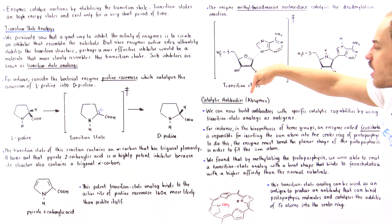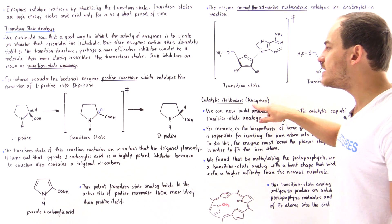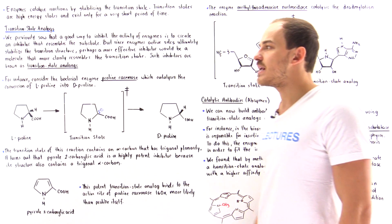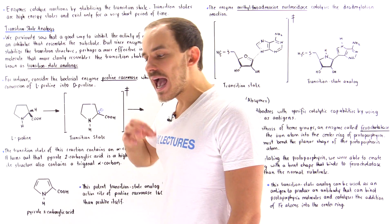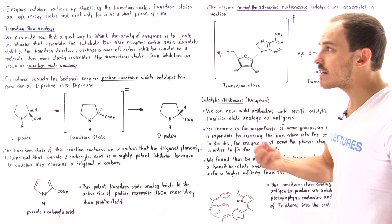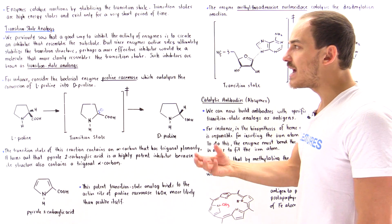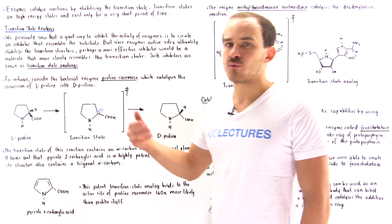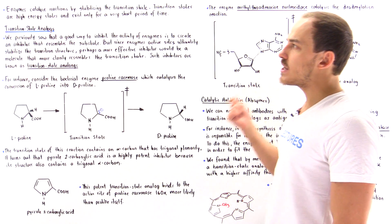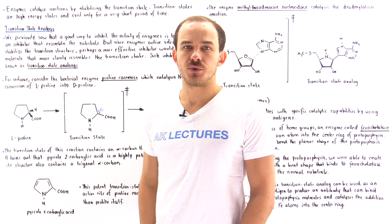These antibodies are commonly known as abzymes, where 'ab' stands for antibody and 'zyme' stands for enzyme. Abzymes are antibodies that contain catalytic capabilities and can catalyze different types of reactions. The way we build them is by using transition state analogs as antigen molecules.